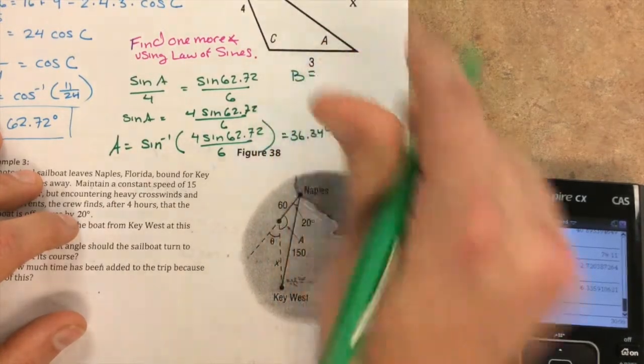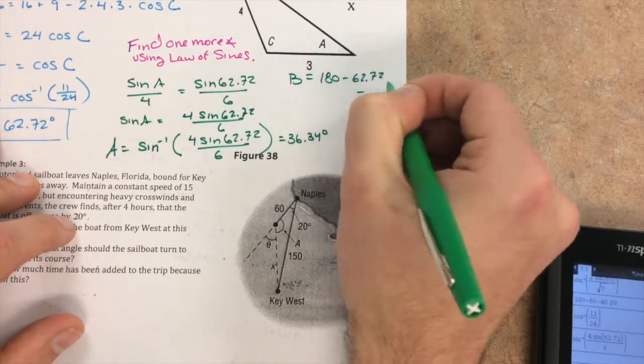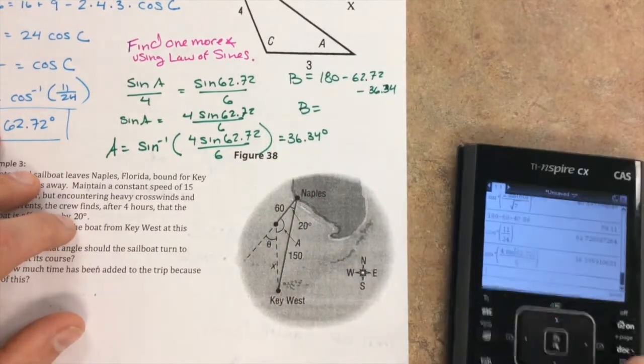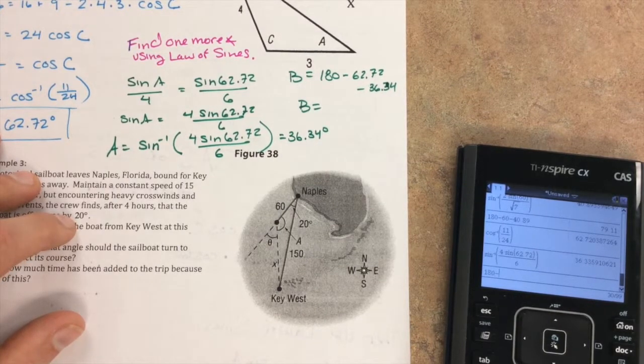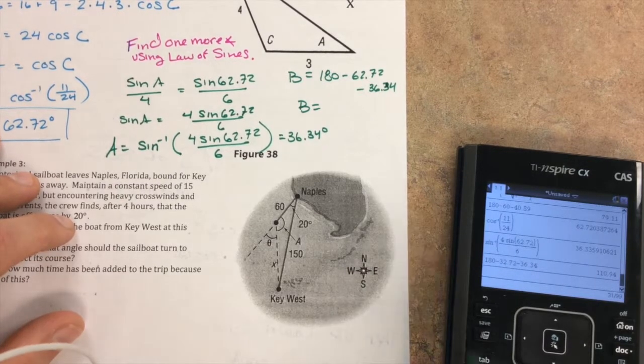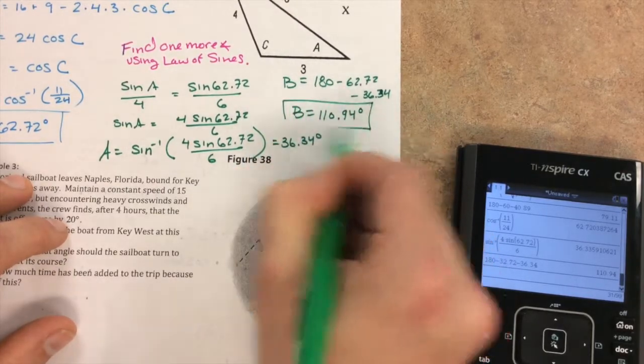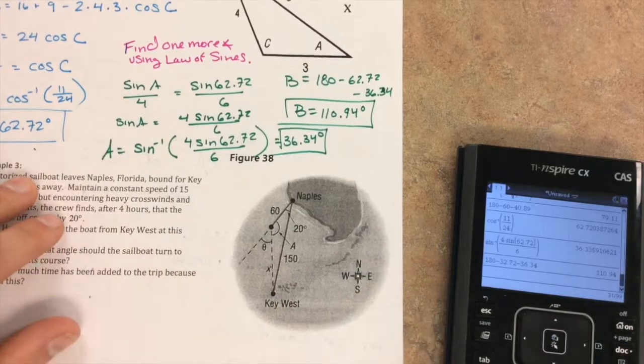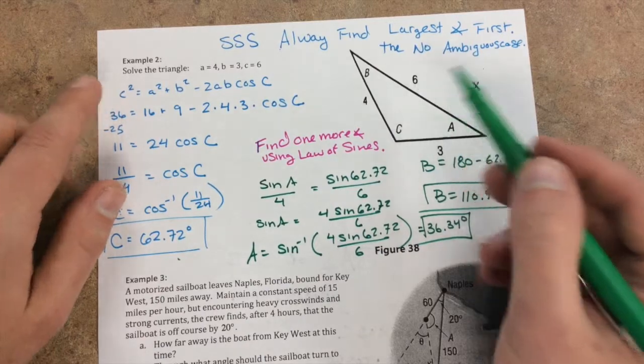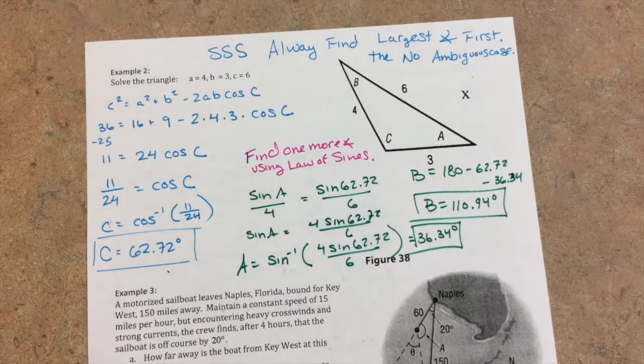That means B is 180 minus 62.72 minus 36.34. B is 80.94 degrees. This is B, this is A, this is C. What did we do? We found the largest angle, then we did the law of sines, and then we used facts about triangles to find the third side.